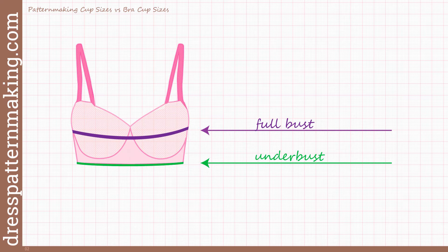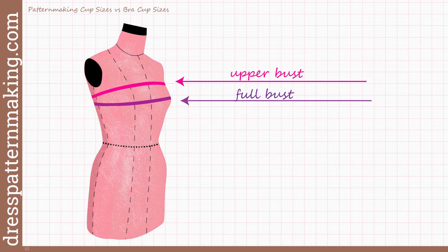If you want to shape your garment to fit really well under the bust, you do that with a waist dart or with style lines such as the empire style line, which takes the fabric right underneath the breast for a close fit down to the waist. For pattern making, the bust cup is based on the difference between your upper bust and your full bust.